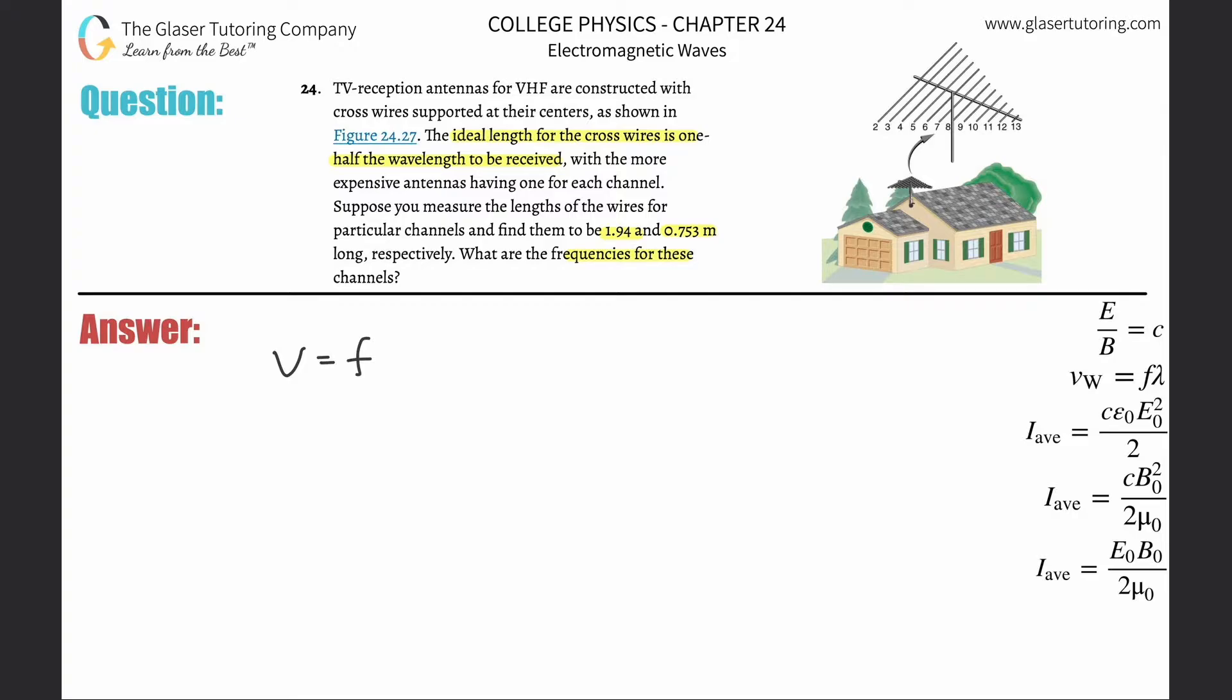The velocity of the wave is equal to the frequency multiplied by the wavelength. We're asked to find the frequency, so divide both sides by the wavelength. The velocity of these waves, as you've seen in the past problems, is 3 times 10 to the 8.